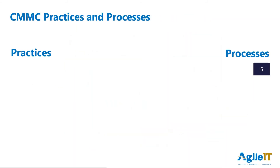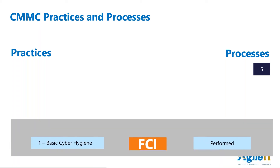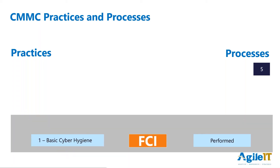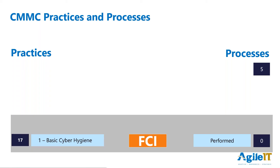So let's look at the CMMC practices and processes. CMMC level 1 will be the most common and it's focused on protecting federal contract information. It has 17 practices and no processes since it is focused on the performance of cybersecurity best practices — just get it done.